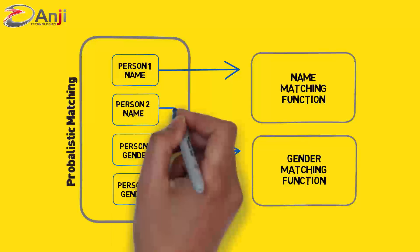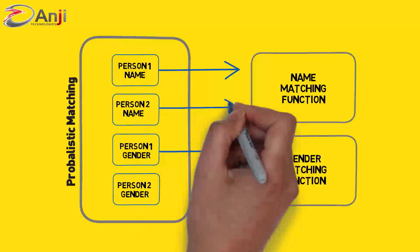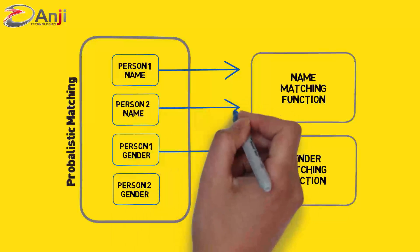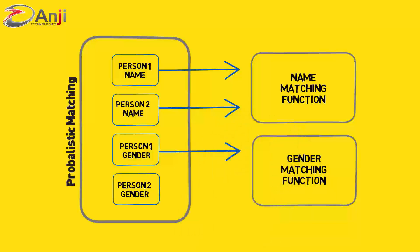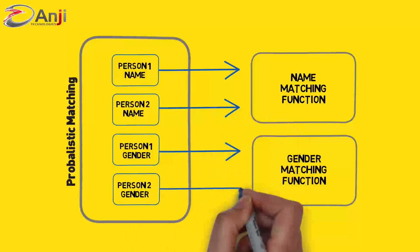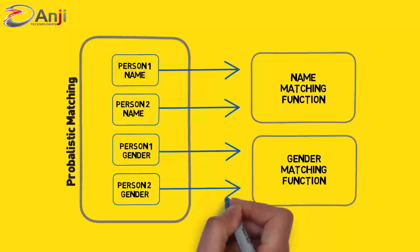It uses weights to calculate the match score, and it uses thresholds to determine a match, non-match, or a possible match.